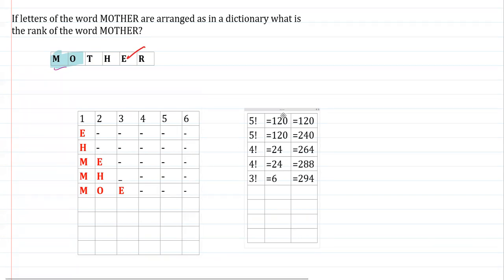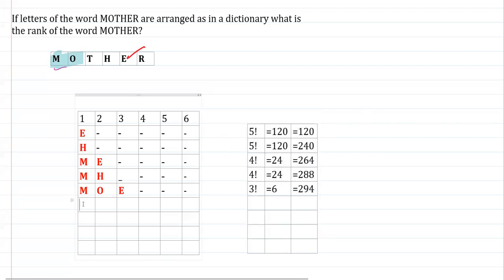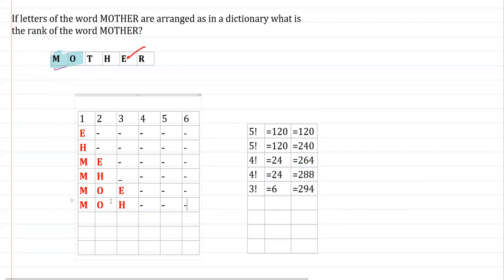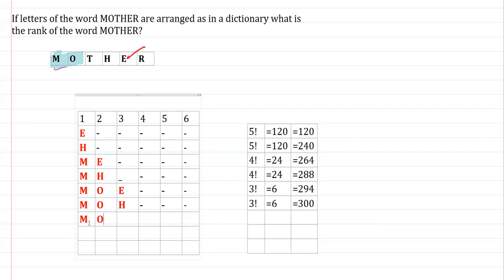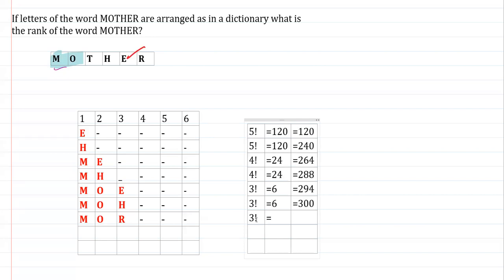With MO fixed, after E the next third letter is H. Fixing H in the third place gives three slots in 3! = 6 ways, adding 6 to 294 gives 300. Then for the third place, R comes next. Fixing R gives three slots in 3! = 6 ways, adding 6 to 300 gives 306.